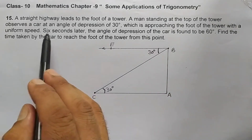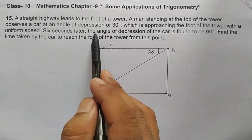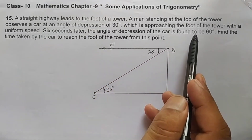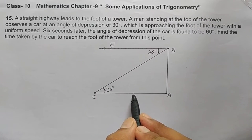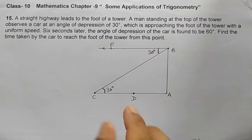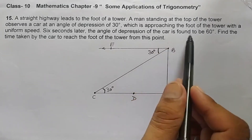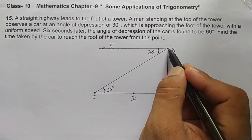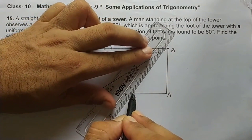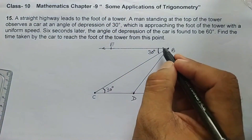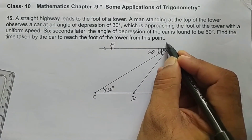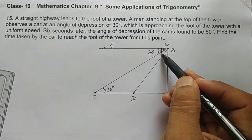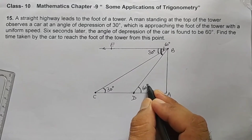After 6 seconds, the angle of depression of the car is found to be 60 degrees. After 6 seconds, the car has moved from C and reached point D. From C to D, the car has traveled. Now he observes the angle of depression is 60 degrees. If he sees the car at point D, this will be the ray of sight, and the angle is 60 degrees. So this inside angle at D will also be 60 degrees, because these are alternate interior angles.